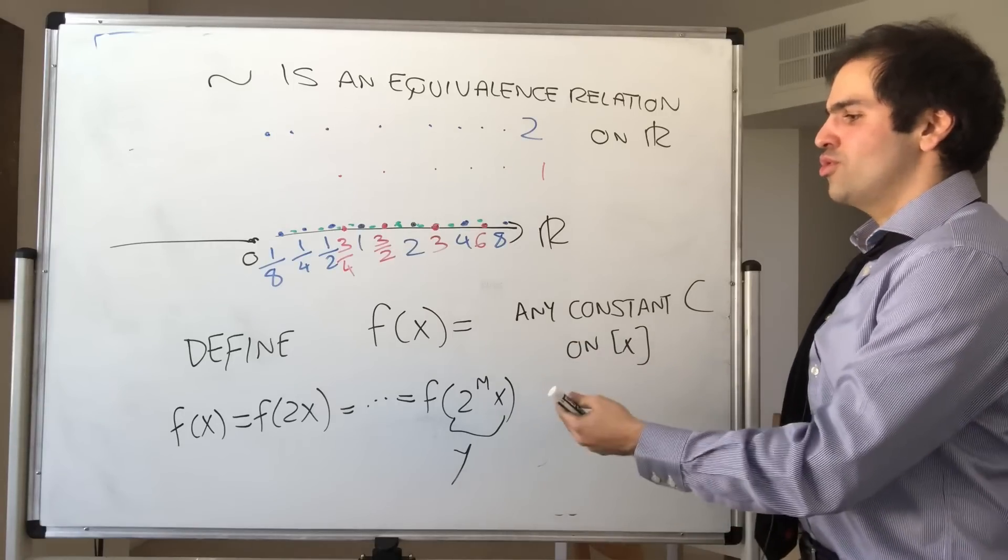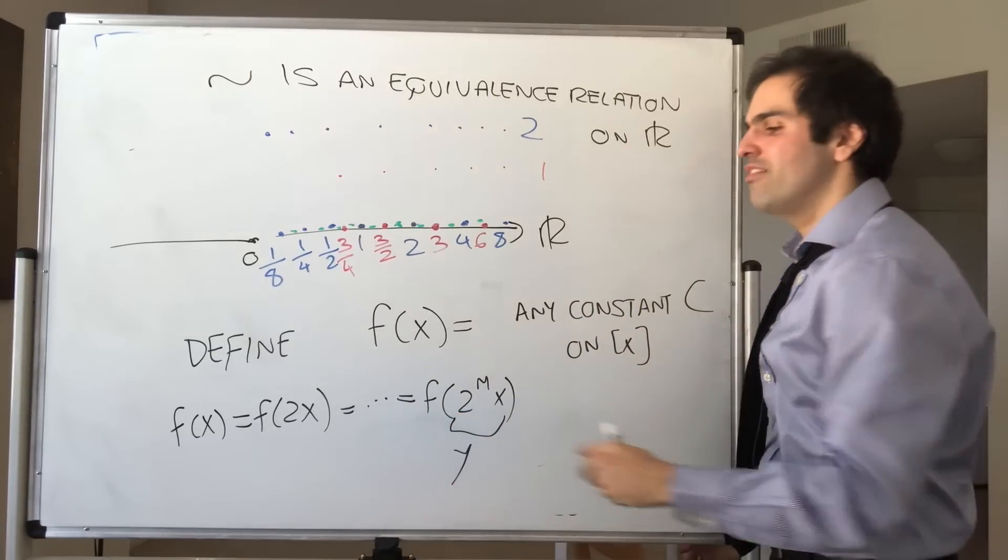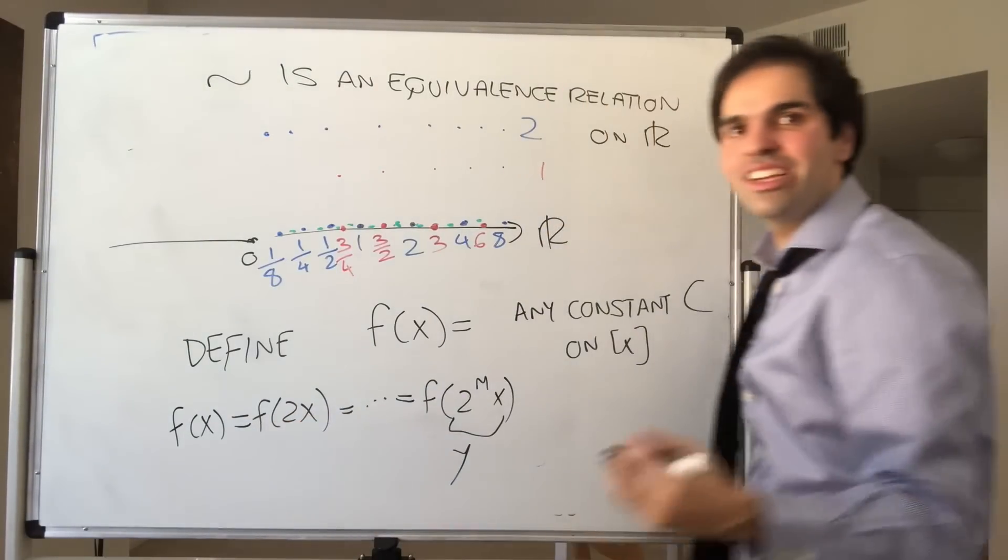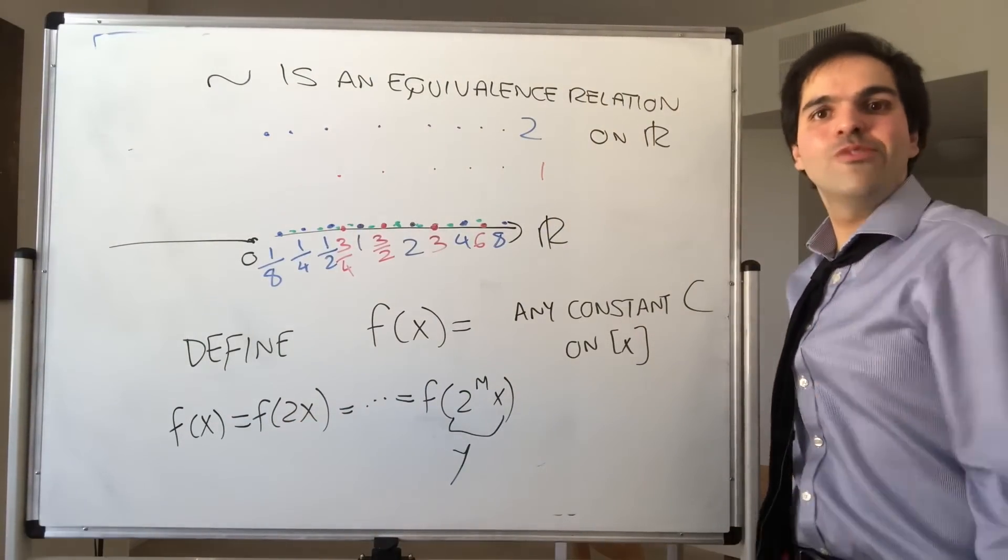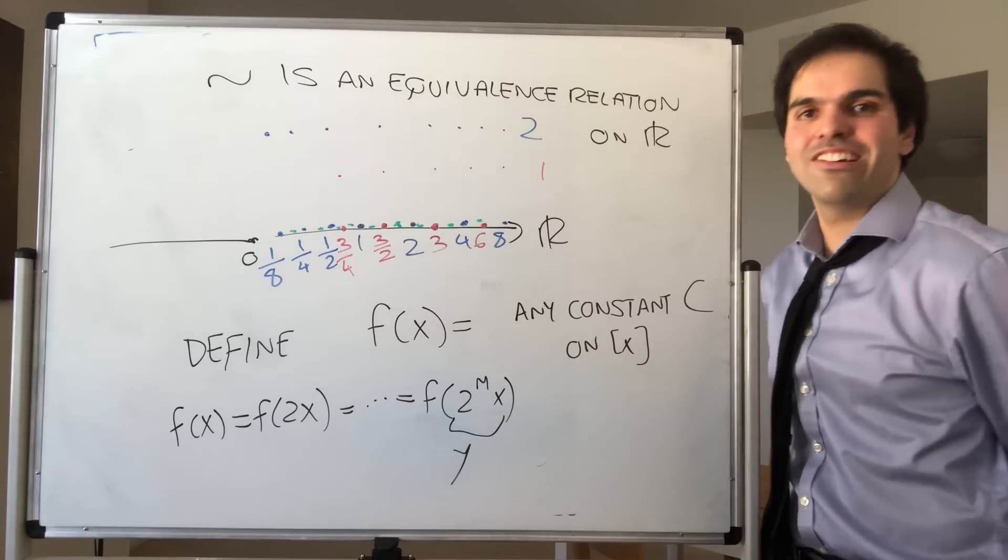And you can, of course, show that we do have the property that f of 2x equals f of x, because 2x is equivalent to x. And therefore, we hence found really all the functions that way, because it's also a necessary condition.